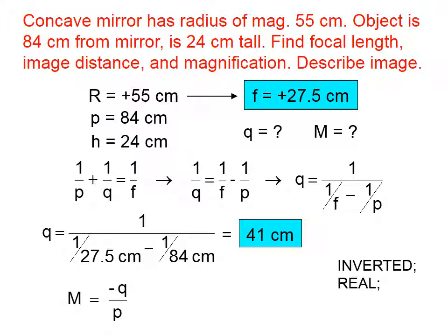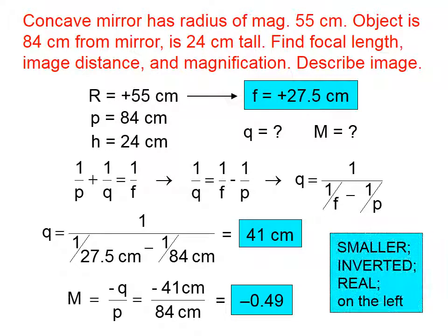And if we want to find the magnification, we could take h prime over h or we could take opposite of q divided by p. So I'm going to do that. I'm going to take the opposite of q divided by p. The centimeter units fall away. Magnification turns out to be simply a number. In this case, a negative number. That number having a magnitude less than 1 is going to tell us that this is a smaller image than the object. And real images are always on the left.